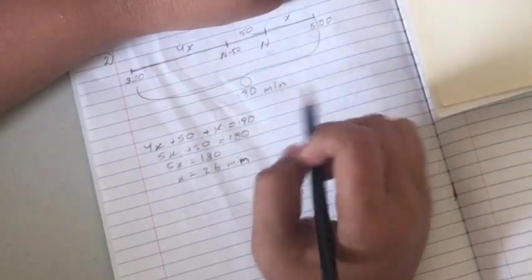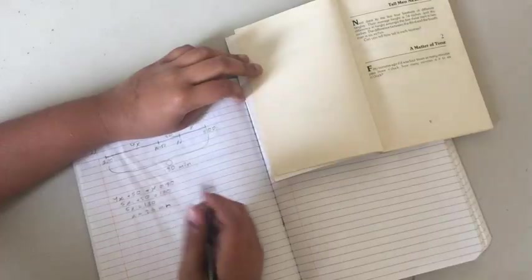We get 26 minutes, so this x is 26 minutes. So from now, after 26 minutes, it's going to be six o'clock. I hope you liked it.